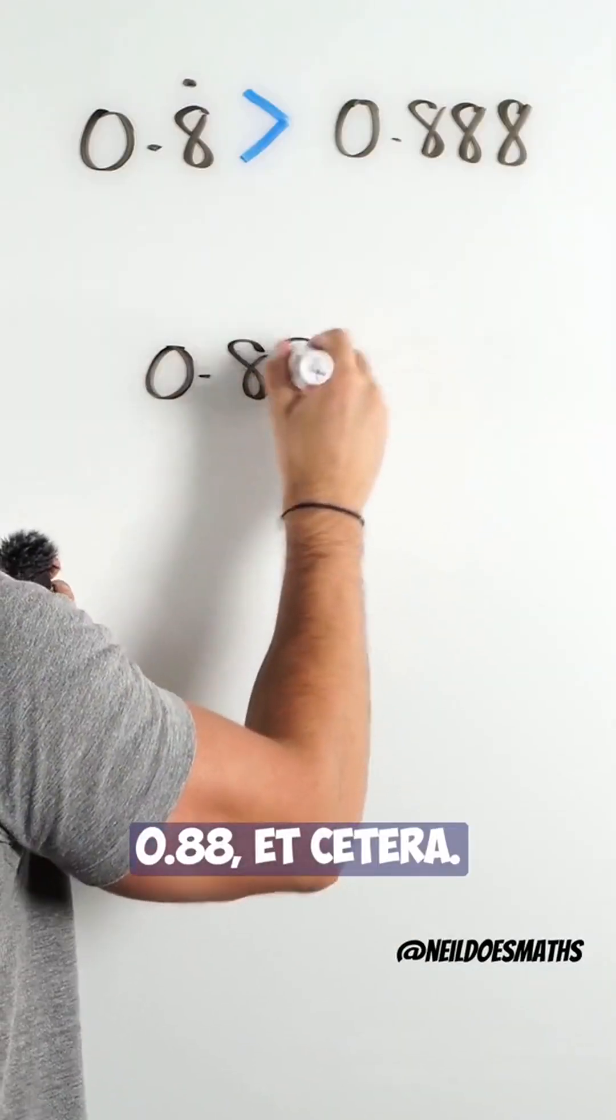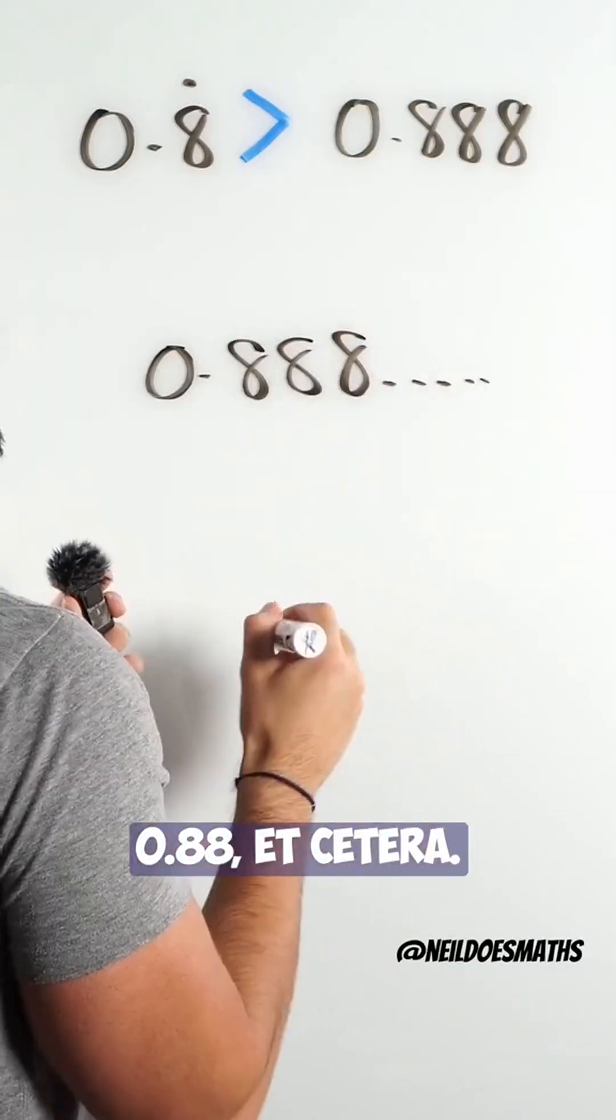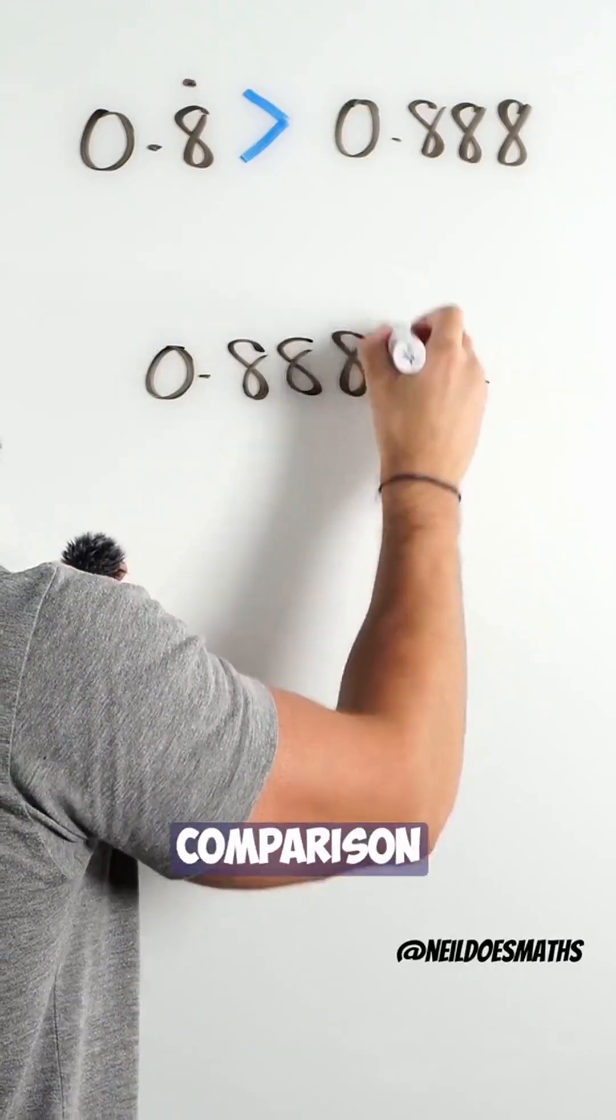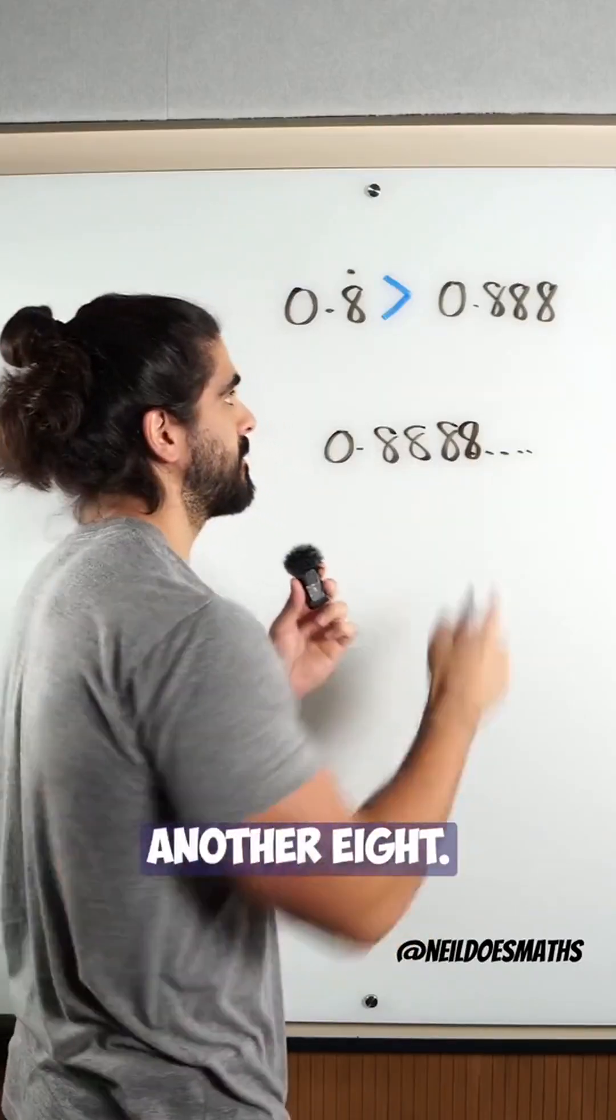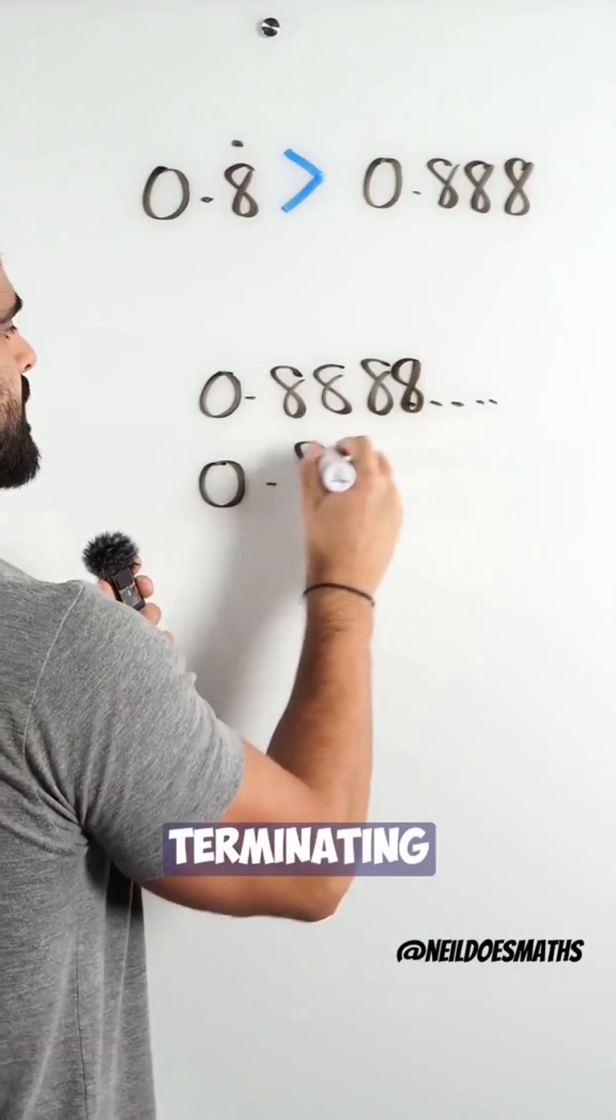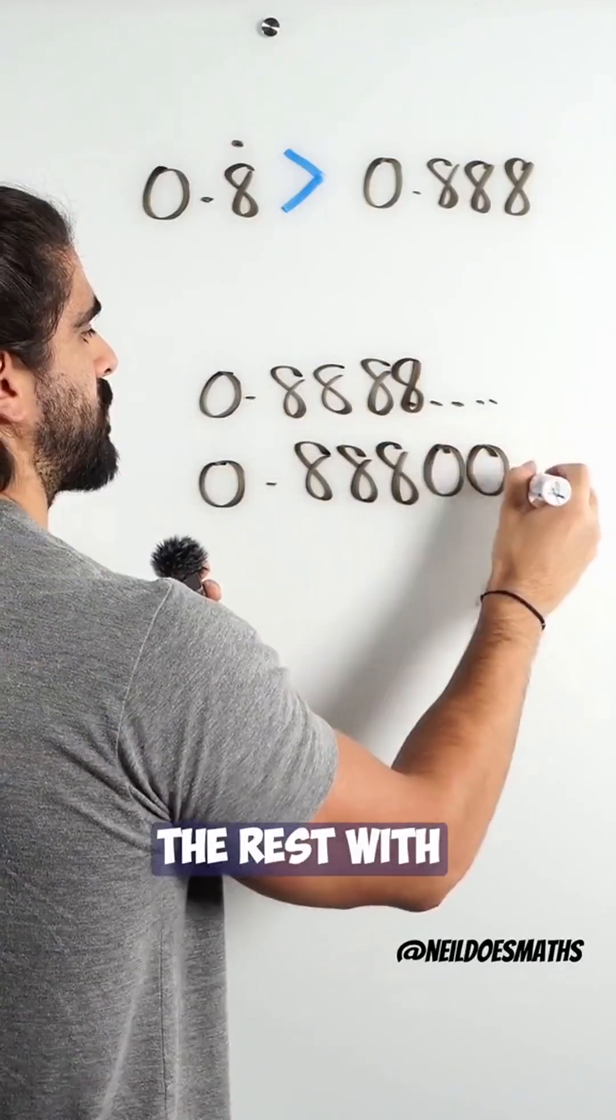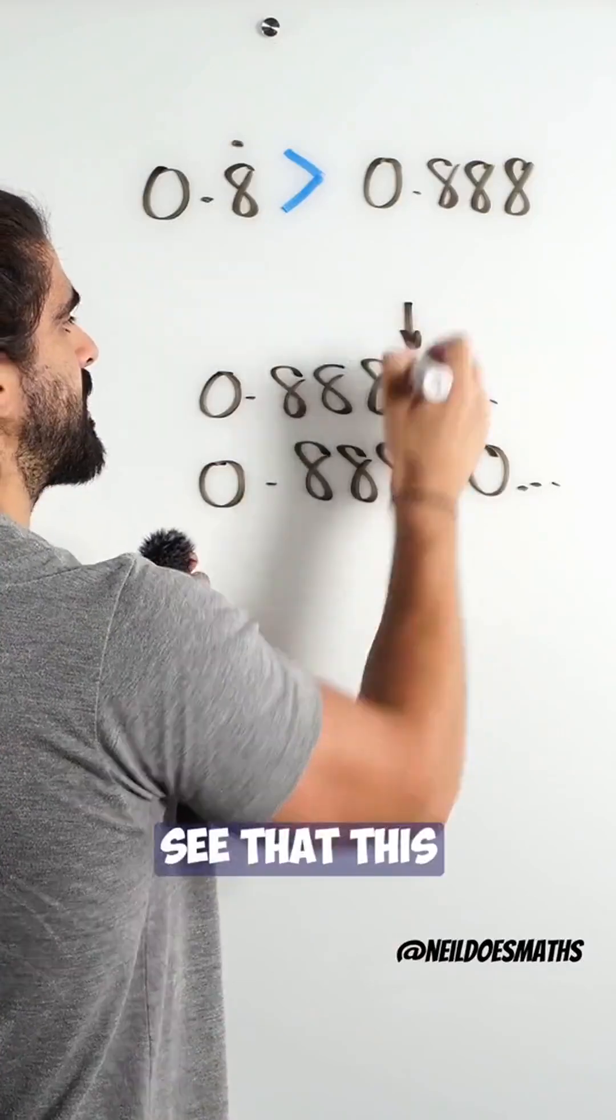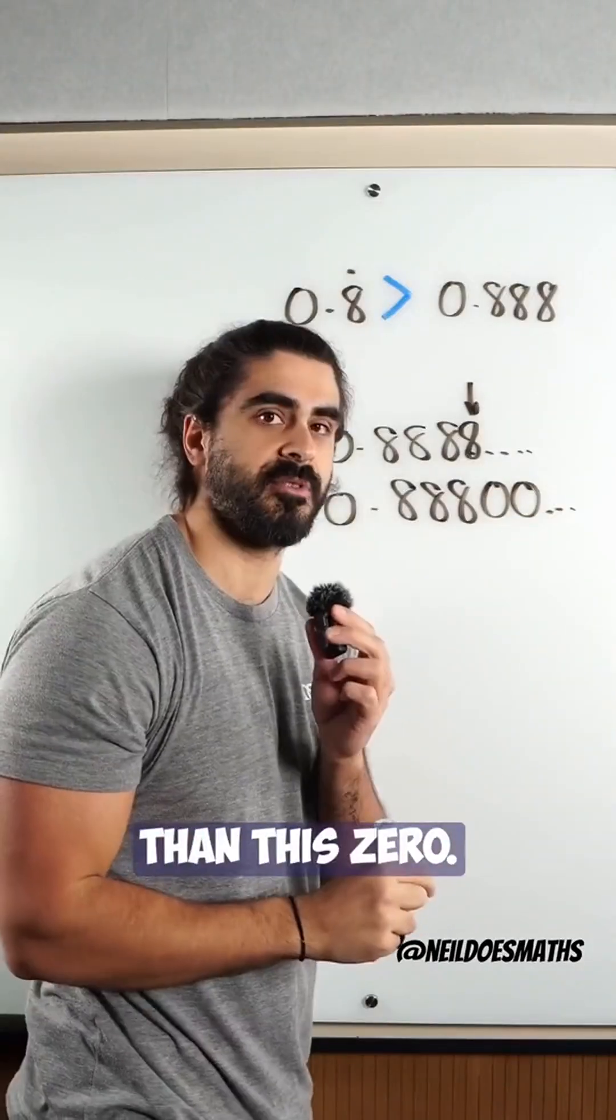So 0.888, etc. In fact, for comparison purposes, I should add another 8. This is a terminating decimal. In fact, we can fill out the rest with 0s. And we can see that this 8 is larger than this 0.